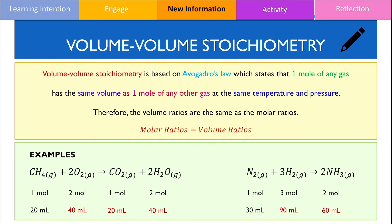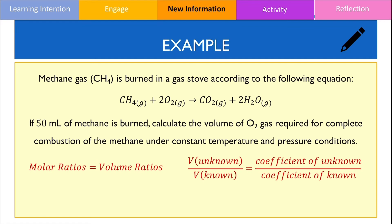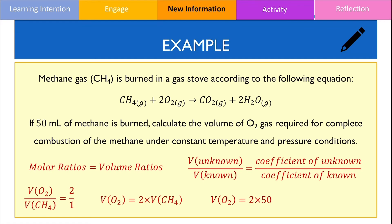Let's now look at a legitimate example. We want to calculate the volume of oxygen gas required given that there was 50 mL of methane. Notice that in volume-to-volume stoichiometric problems, temperature and pressure conditions are constant and values are typically not provided. Since mole ratios are equivalent to volume ratios, the volume of oxygen should be 2 times the volume of methane, hence the volume of oxygen gas equals 100 mL.